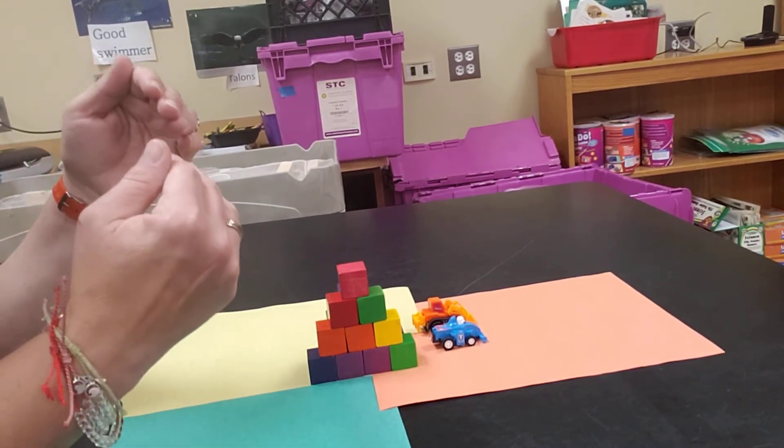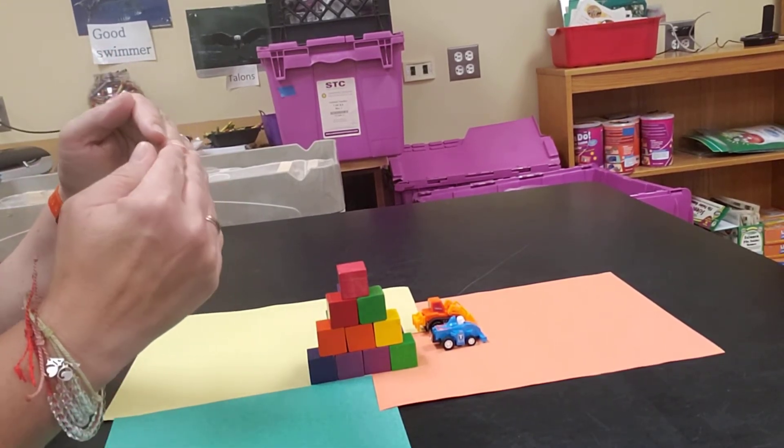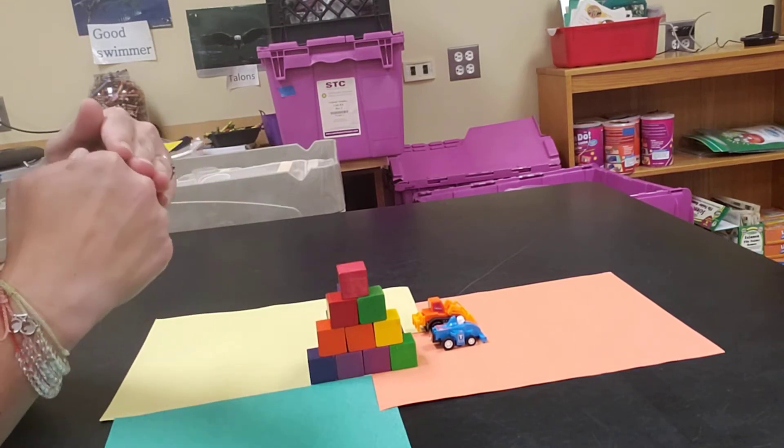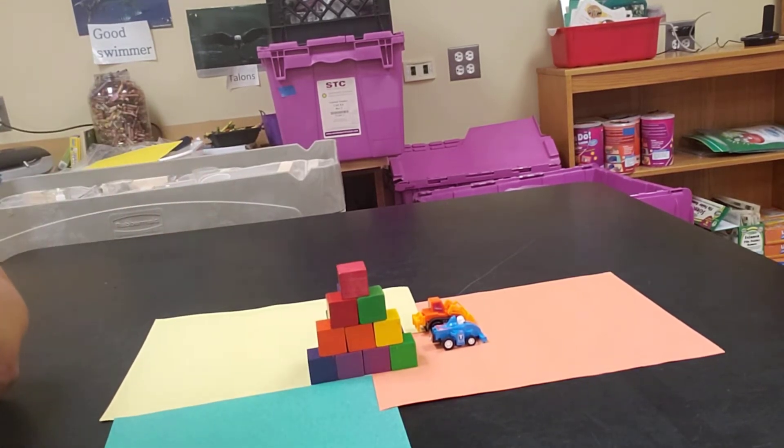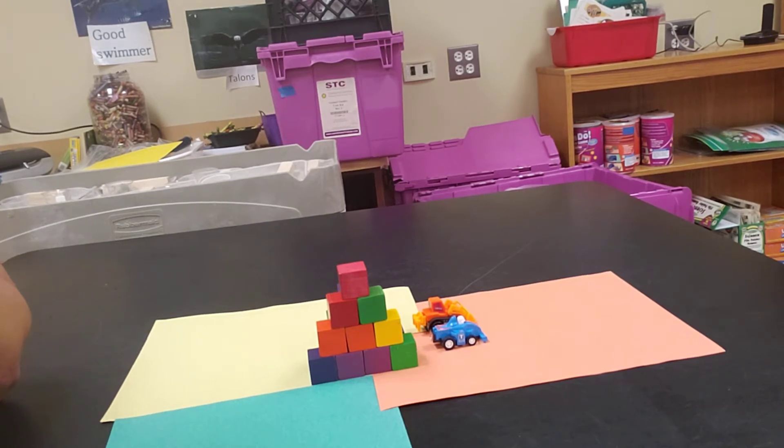The plates are either going to push against each other, slip past each other, or push one underneath each other. California has plates that meet together and that's why there are earthquakes there. So when an earthquake happens the land changes quickly.